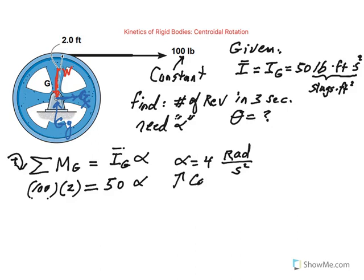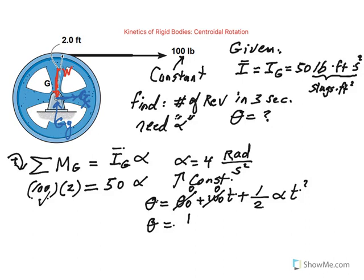So now, this alpha happens to be constant since this force is constant. Therefore, if alpha is constant, we know that for constant angular acceleration, one of the equations that we can use is theta equals theta 0 plus omega 0 t plus one half alpha t squared. So we know theta sub 0 is 0, omega 0 is starting from rest. So theta is going to be one half, alpha is 4, and we set time 3 seconds. So this becomes 18, units should be radians.